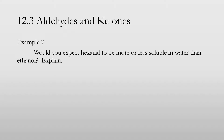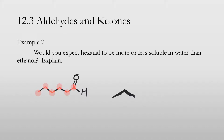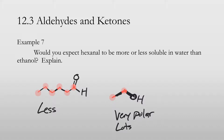Example 7 asks whether hexanal would be more or less soluble in water than ethanal. Hexanal has six carbon atoms, while ethanal has only one and two carbons — very small and therefore very polar, with lots of H-bonding. Hexanal, as confirmed by the previous table, is not soluble in water. So hexanal is less soluble in water than ethanal.